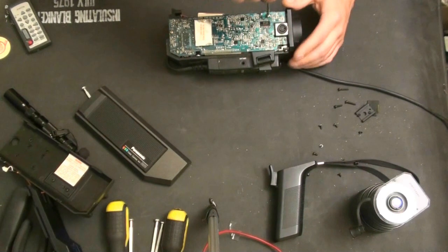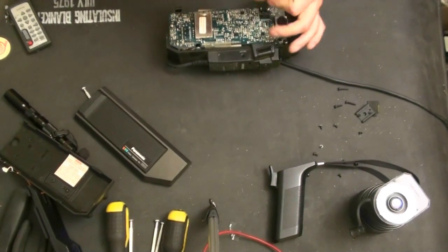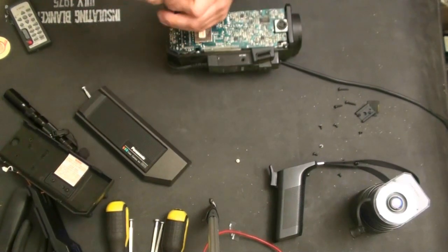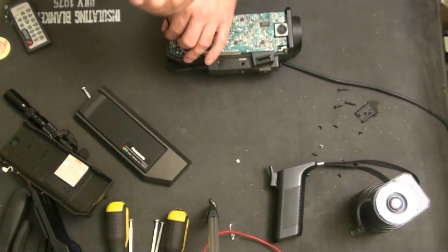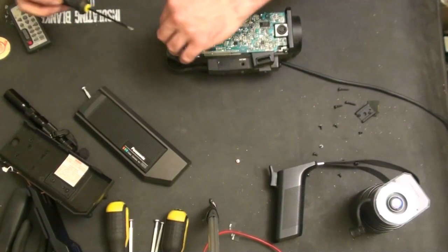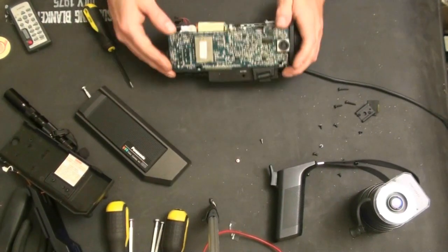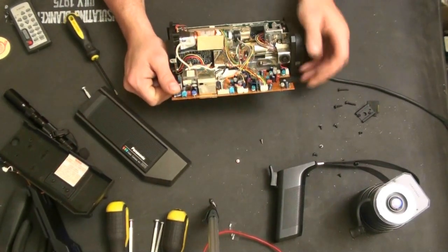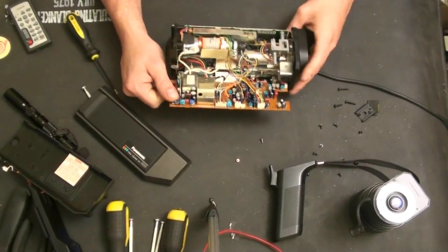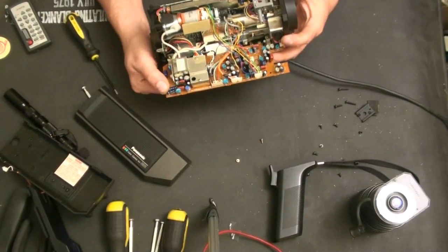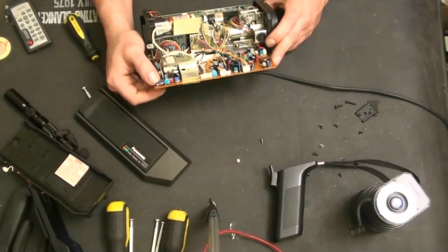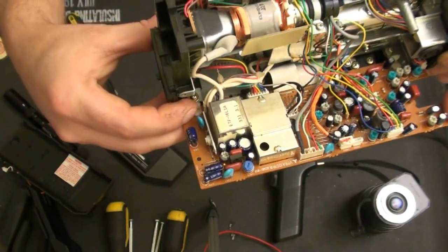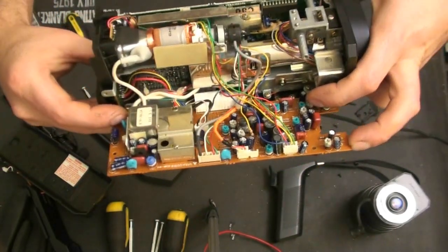Okay, so we'll remove this circuit board here. Two screws. It should just come out. There we go. And that folds out like that. And it's on little hinge pieces in here.